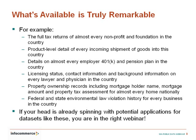At the county level, you can get property ownership records including the mortgage holder's name, the amount of the mortgage, and property tax assessments — for almost every residential and commercial property in the country. At the federal level, you can find every federal and state environmental law violation for every business in the country, plus warnings, fines, and violations relating to occupational safety and health. That's just a few random examples, but hopefully that's got your head spinning with potential applications and you're ready to hear more.